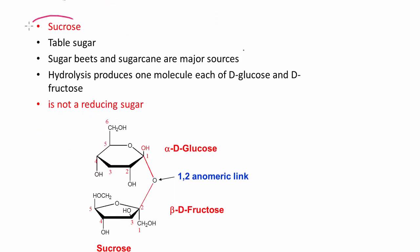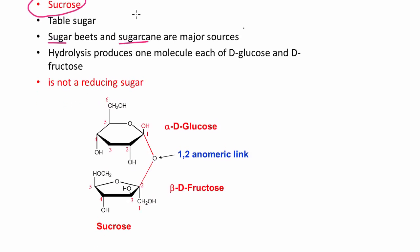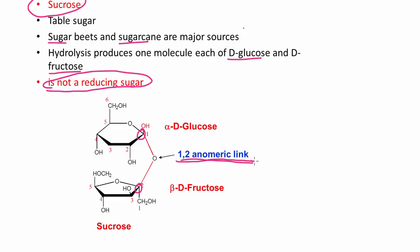Table sugar — sucrose — has major sources in sugarcane and sugar beets. Hydrolyzing sucrose gives one molecule of D-glucose and one molecule of D-fructose. Sucrose is not a reducing sugar. The link between the two monosaccharides is between the two hemiacetal carbons — a 1,2 anomeric link between carbon-1 of glucose and carbon-2 of fructose. Sucrose is not a reducing sugar because there is no available anomeric or hemiacetal carbon.